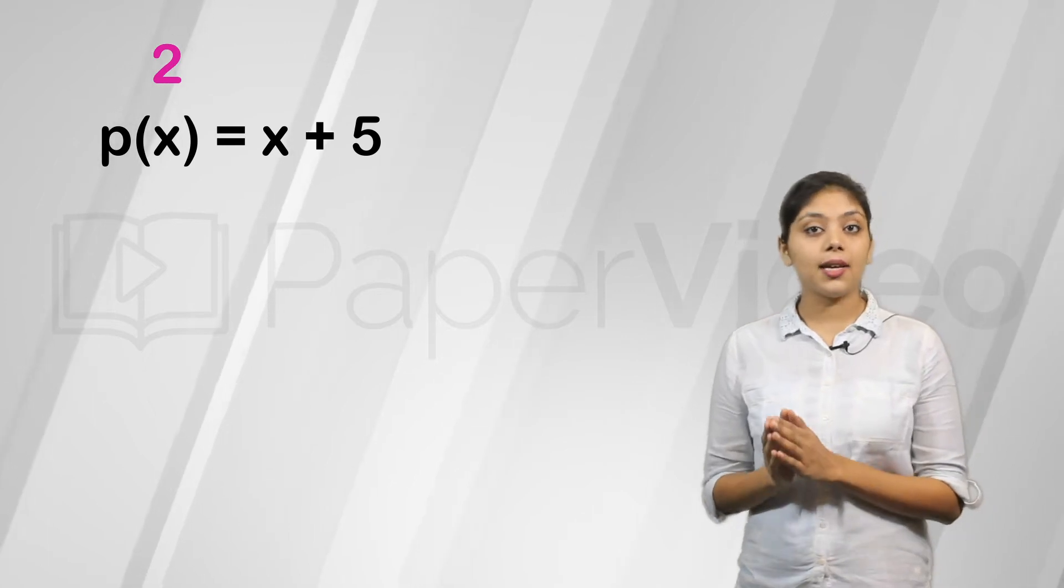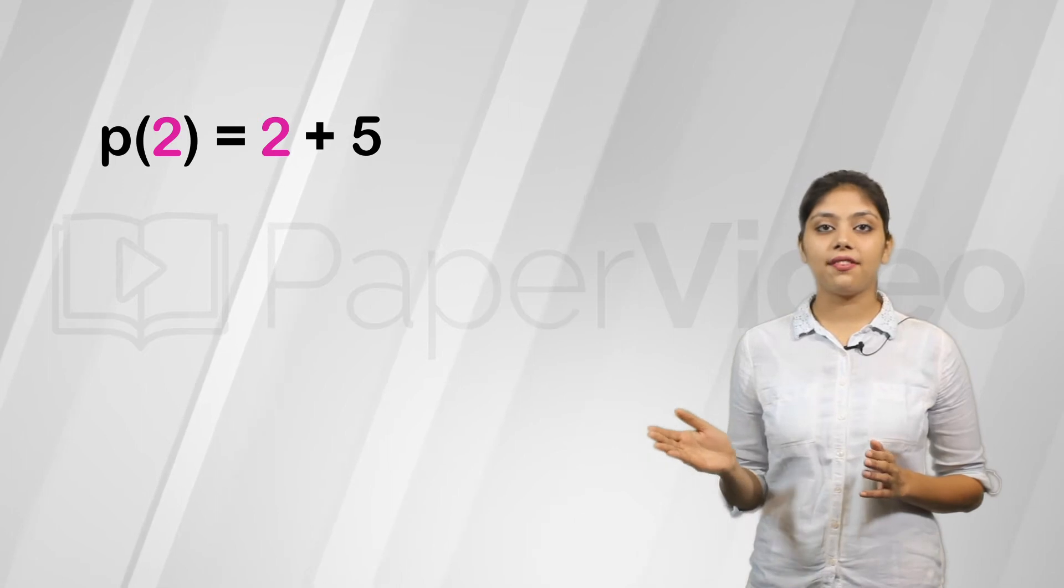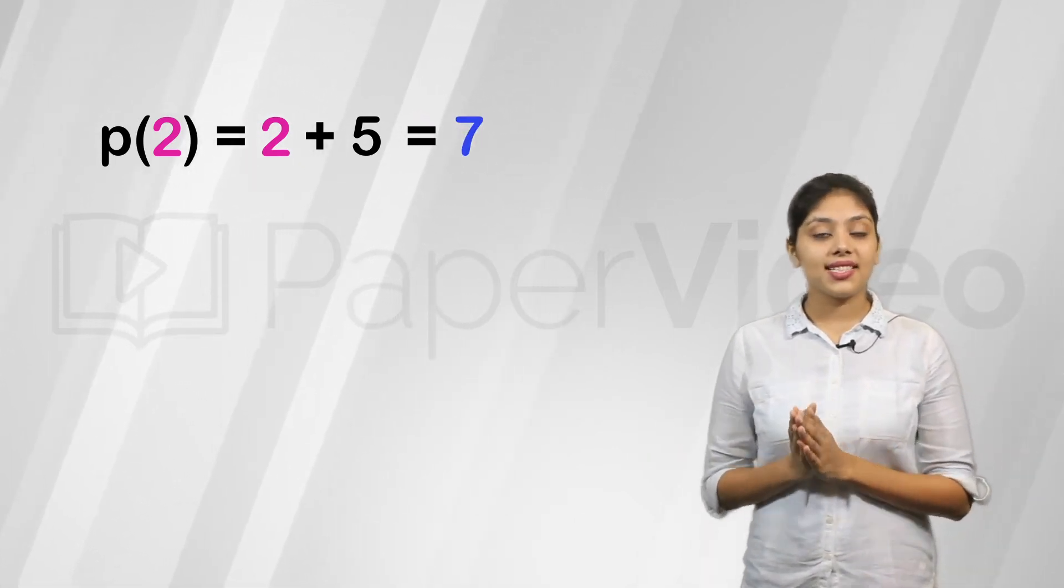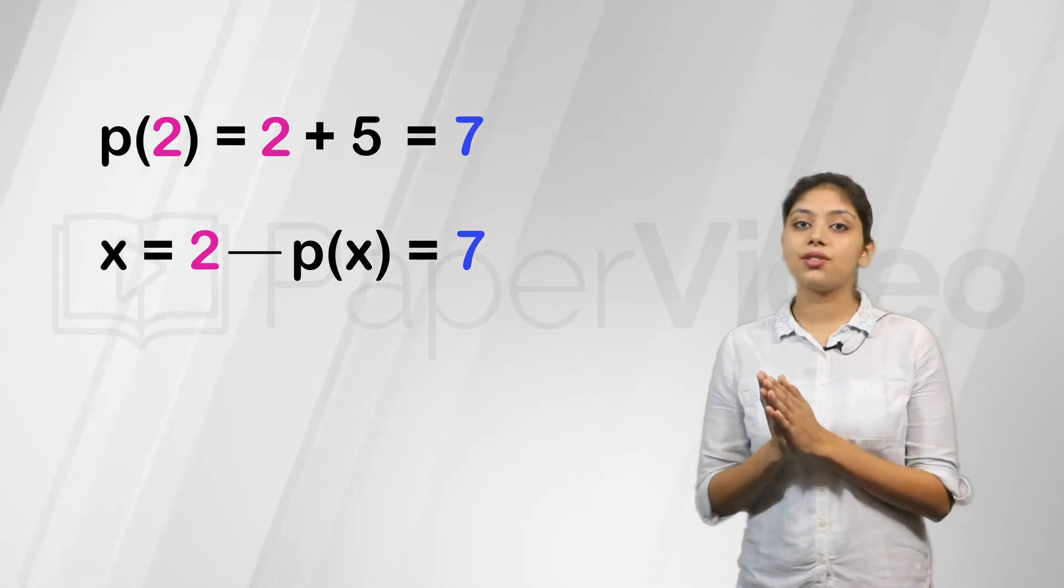Let us put 2 in the place of x. We can see that 2 plus 5 equal to 7. So, we can say that when x equal to 2, p of x equal to 7.